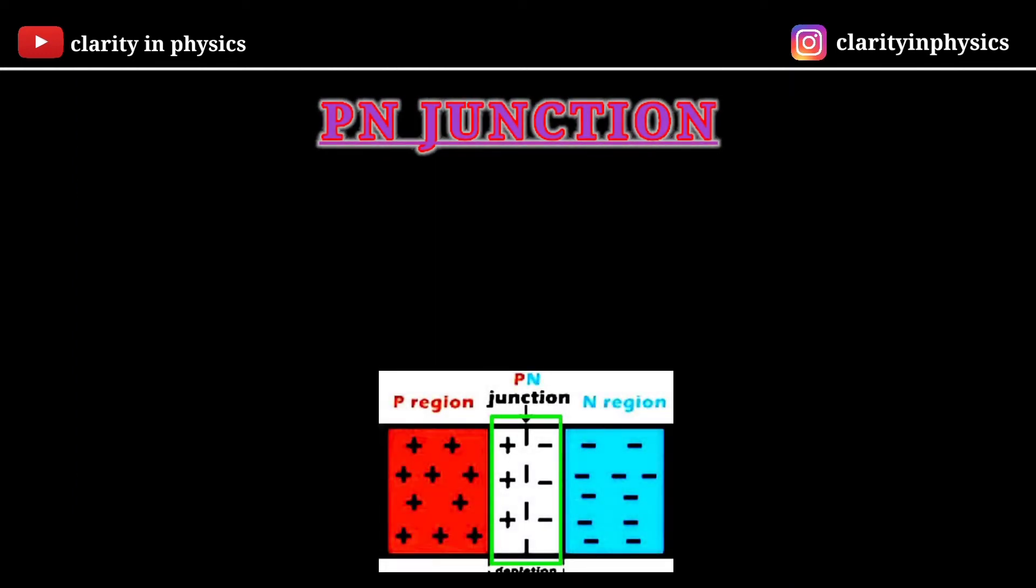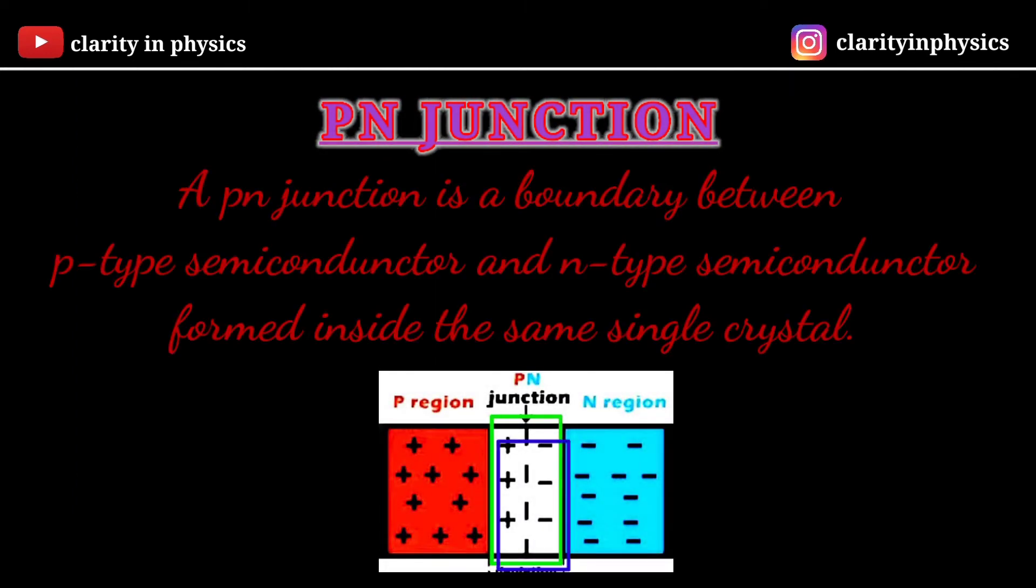P-N junction. A P-N junction is a boundary between P-type semiconductor and N-type semiconductor formed inside the same single crystal.